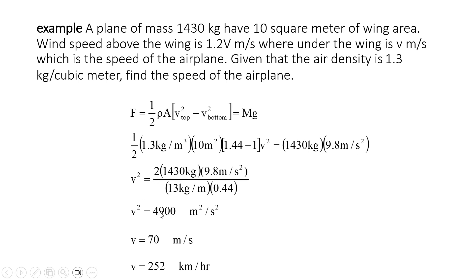Solving for V squared gives 4,000 meters squared per second squared, and taking the square root gives about 70 meters per second or 252 kilometers per hour. This works when you are in the air. Actual airliners travel at almost 700 kilometers per hour, so 252 is reasonable considering this is not a big plane — it's just 1.4 tons. To take off, it needs a lot more velocity, but increasing speed is possible.